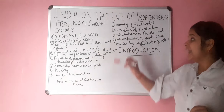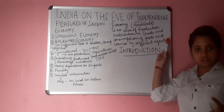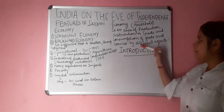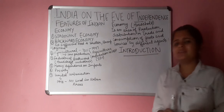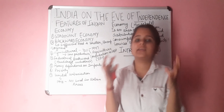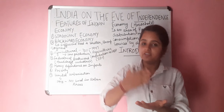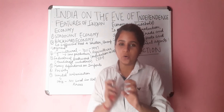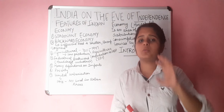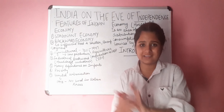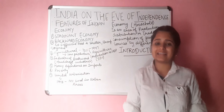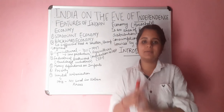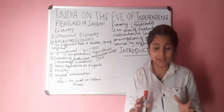Economy is an area of production, distribution, trade and consumption of goods and services by different agents. So in simple words, economy is an area of production, distribution and consumption of goods and services. What is production? Production simply means making the product. Distribution means sharing the product, and consumption means consuming that product — which we have made or someone else has made.